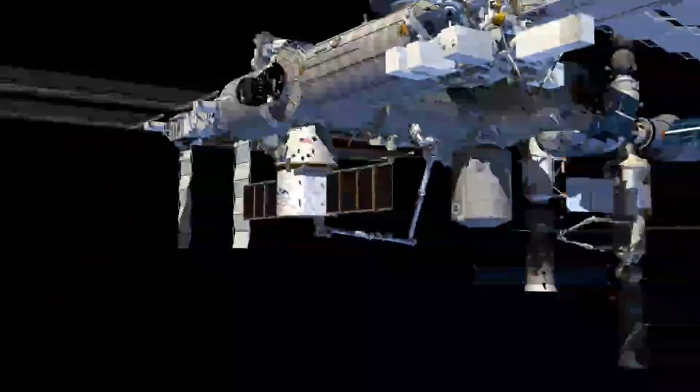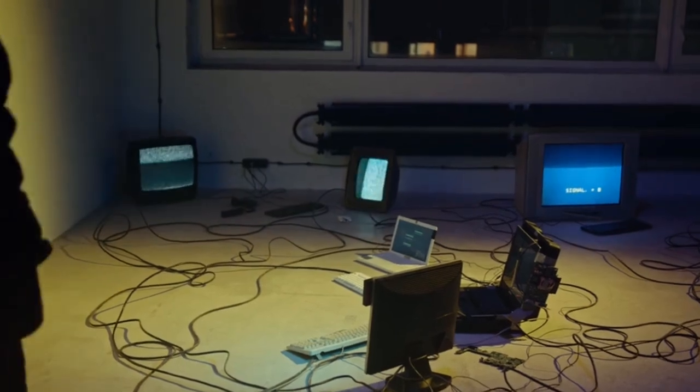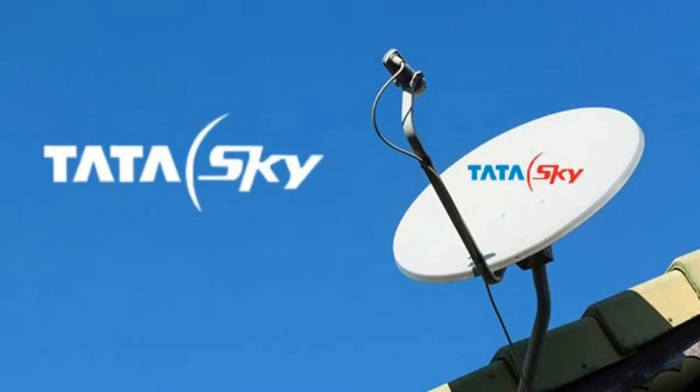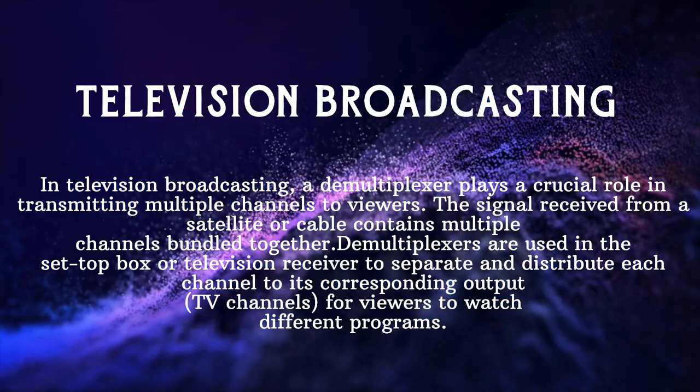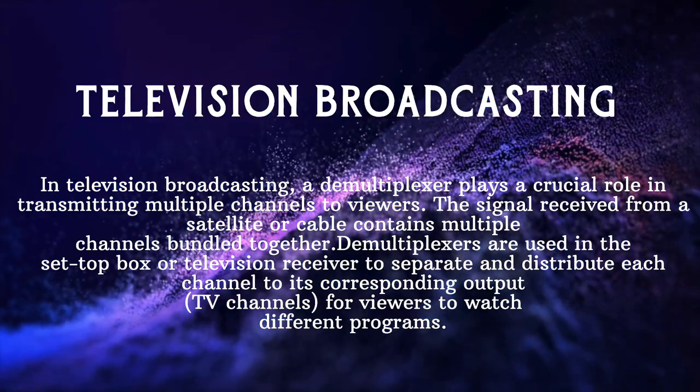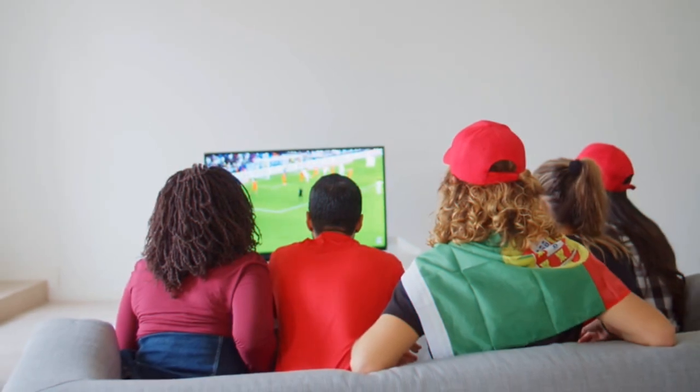In television broadcasting, a demultiplexer plays a crucial role in transmitting multiple channels to viewers. The signal received from a satellite or cable contains multiple channels bundled together. Demultiplexers are used in set-top boxes or television receivers to separate and distribute each channel to its corresponding output.